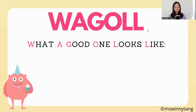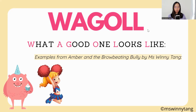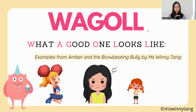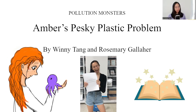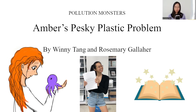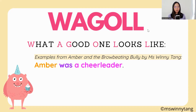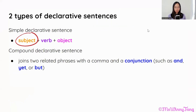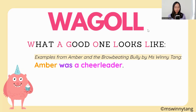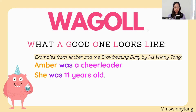Here's what a good one looks like. This is an example from a narrative I've written called Amber and the Brow Beating Bully — actually a prequel to the book that my friend and I are writing. 'Amber was a cheerleader.' Amber is the subject, was is the verb, and a cheerleader is the object. 'She was 11 years old.' She is the subject, was is the verb, and 11 years old is the object.